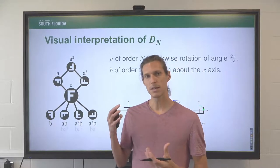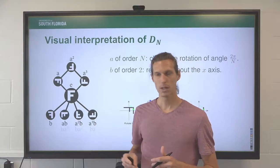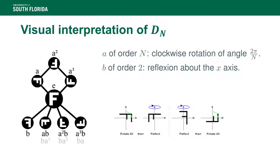We identify the element of order n with clockwise rotations of the image by an angle 2 pi over n, and the elements of order 2 with a reflection. For D4, we have one rotation, two rotations, three rotations, and then the fourth rotation leaves you back to the original figure. Here is a reflection: we turn around the x-axis. If you compose the reflection with the clockwise rotation, you get what happens if you rotate and then reflect.